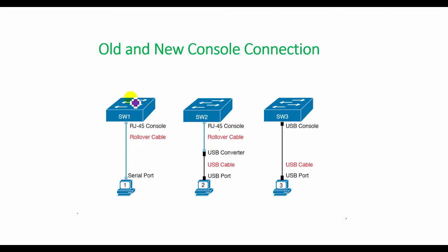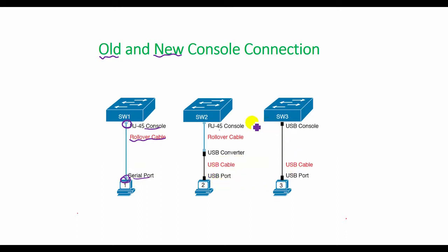The physical console connection uses three main components. As shown in the figure, there is the rollover cable that works with the console and serial ports, the physical console port on the switch, and the physical serial port on the PC. However, the physical cabling details have changed over time due to advances in serial interfaces on PC hardware. Most PCs today use a standard USB cable for the console connection, and Cisco has been including USB ports as console ports on network routers and switches.